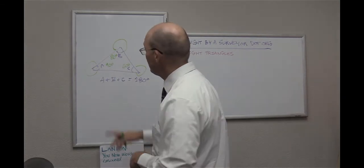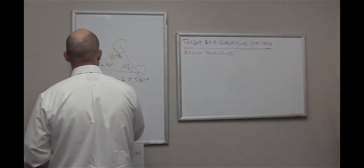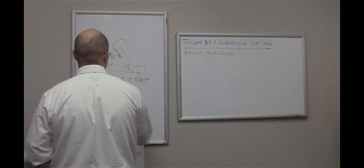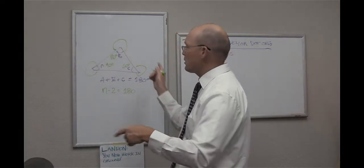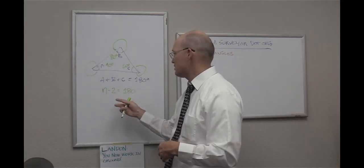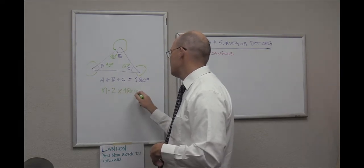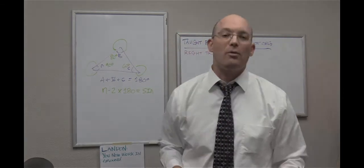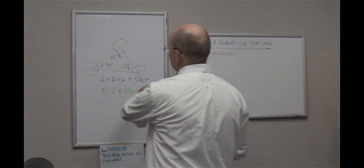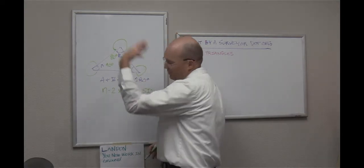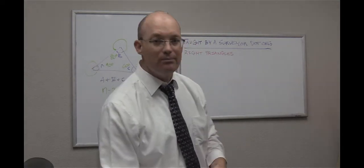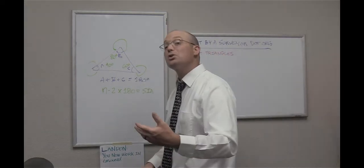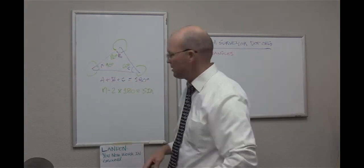Surveyors also use this rule, and you can extend it to other kinds of polygons. It's called the N minus two times 180 rule, which says: take the number of sides of any polygon, subtract two, multiply by 180, and that equals the sum of the interior angles. We'll talk more about that rule in another video. It uses this basic property of a triangle and applies it to all closed polygons — not just triangles. We use it in surveying when we calculate what we call angular misclosure.